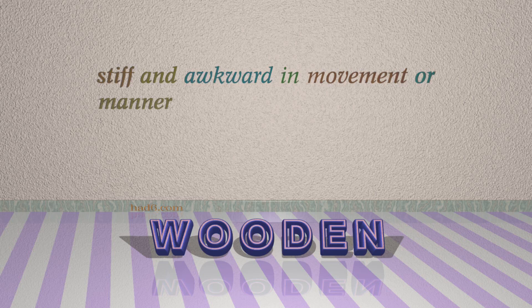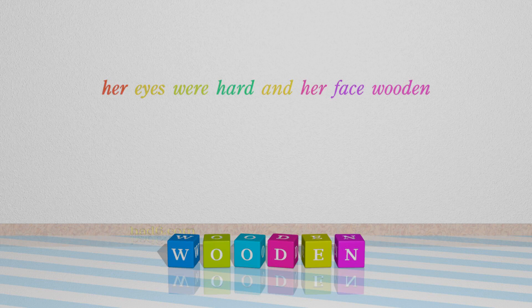Number 2: Wooden, which means stiff and awkward in movement or manner. For example: her eyes were hard and her face wooden.